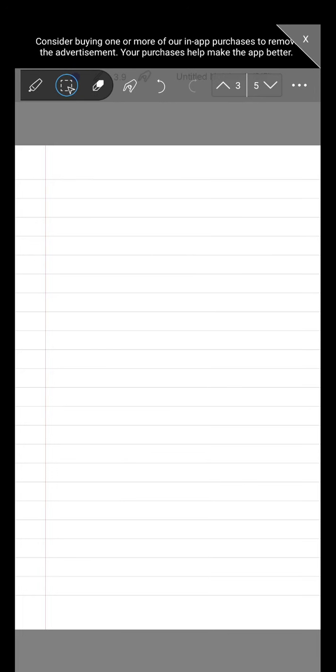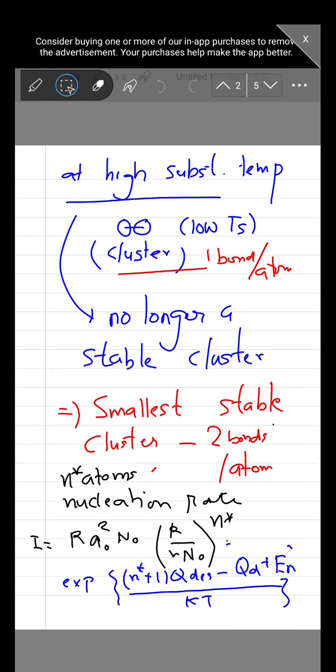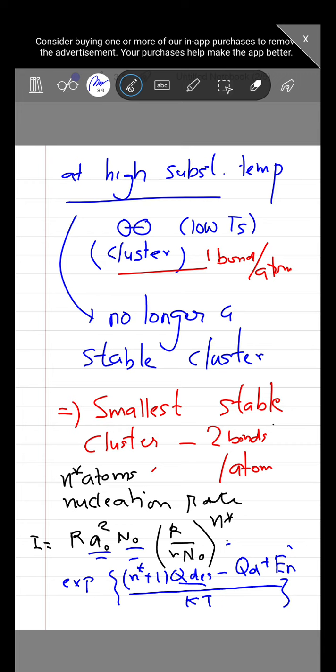So this expression here has got certain terms and with increasing temperature. This is the desorption energy, this is the critical radius, this is the average number. So the terms have got their own meaning.